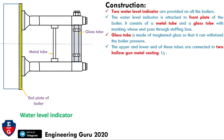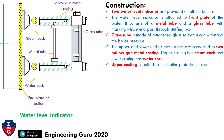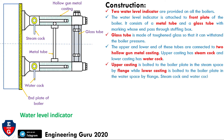The upper and lower ends of the glass tube are connected to hollow gun metal castings. The upper casting has a steam cock and the lower casting has a water cock. As seen in this figure, this is the steam cock, this is the water cock, and this is the hollow gun metal casting — one for the upper side and one for the lower side.